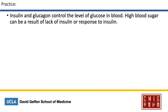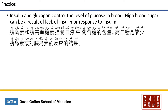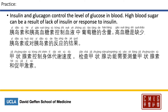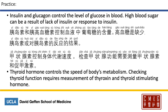Let's see some practice. To say 'insulin and glucagon control the levels of glucose in blood; high blood sugar can be a result of lack of insulin or response to insulin,' in Chinese that is: 胰岛素和胰高血糖素控制血液中葡萄糖的含量。高血糖是缺少胰岛素或对胰岛素的反应的结果。 And translating: 甲状腺激素控制身体的代谢速度。检查甲状腺功能需要测量甲状腺素和促甲状腺激素。 That would be: thyroid hormone controls the speed of the body's metabolism; checking thyroid function requires measurement of thyroxin and thyroid stimulating hormone.